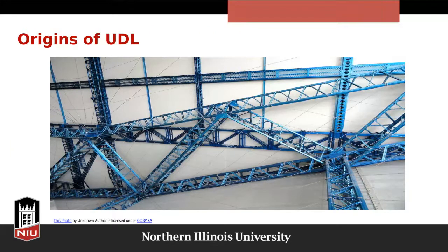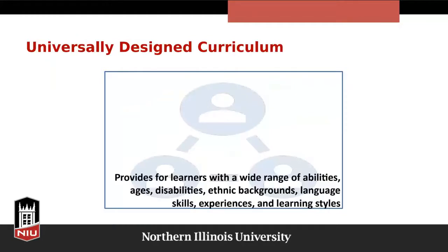UDL provides a framework to create and implement lessons with flexible goals, methods, materials, and assessments that support learning for all students. Universally designed curriculum provides learners with a wide range of abilities, ages, disabilities, ethnic backgrounds, language skills, experiences, and learning styles. Learning happens in an interaction between an individual and the environment — it's social and contextual. It's important to understand how a person's knowledge shifts and changes as they interact with the environment.